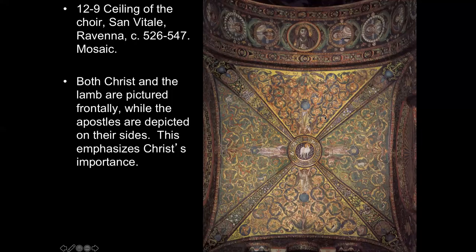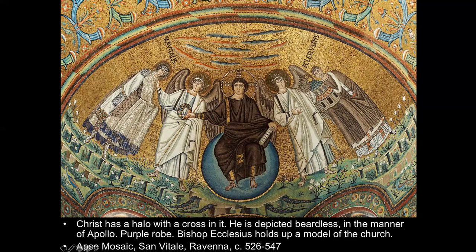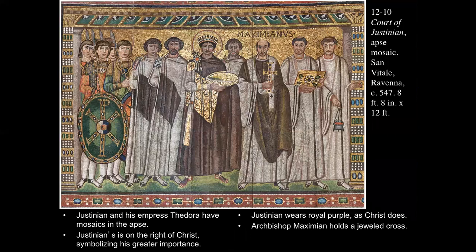Both Christ and the lamb are pictured frontally, while the apostles are depicted on their sides — this is a type of hierarchic scale. Centralized and facing the same way emphasizes Christ's importance. Getting down closer to the ground, we can look at the trade as we've seen before as an Apollo-Christ: a young man with long flowing hair, a halo behind him, and a purple robe, showing him as the King of Heaven. But notice this is quite different in how the figures are portrayed and in the concept of three-dimensionality than what we'd seen previously.